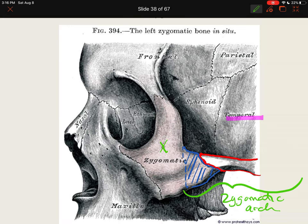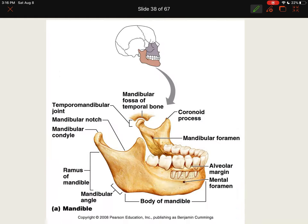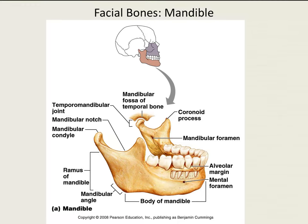You can cross out the zygomaticofacial foramen, which you can see here, but I'm not going to cover that because on most of your lab skulls you can barely see one.